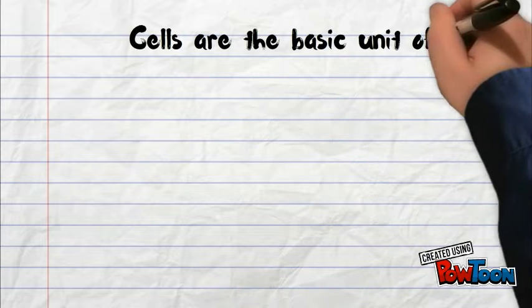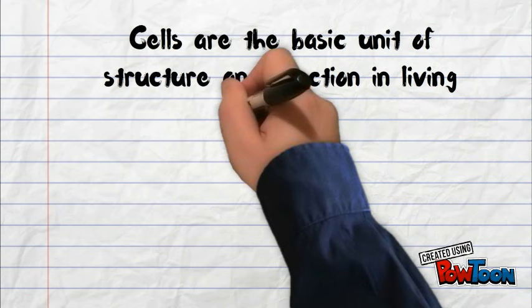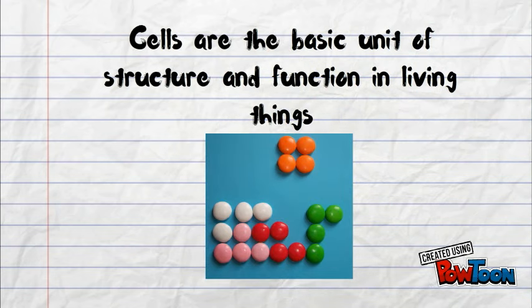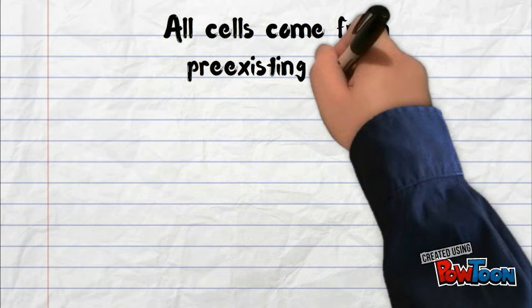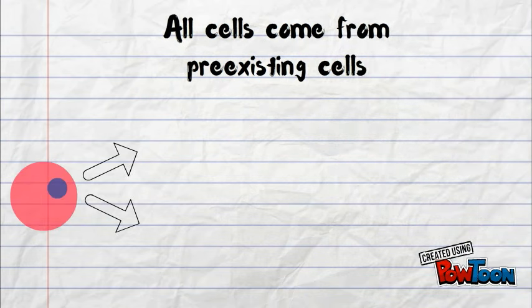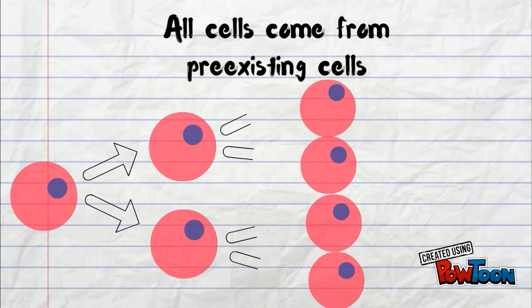The second part of the cell theory says that cells are the basic unit of structure and function in all living things. Now this one may be a little confusing, but we are going to explore this in more detail in just a moment. The third part of the cell theory says that all cells come from pre-existing cells. This is just a fancy way of saying that cells make new cells, and those cells then make new cells, and so on.